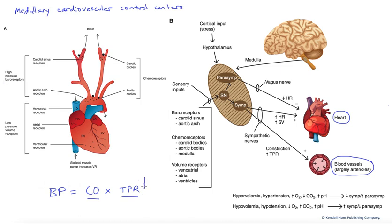That vasodilation would cause a decrease in total peripheral resistance, which would cause a decrease in blood pressure. That fall in blood pressure would potentially compromise blood flow to other essential organs and tissues. Pressure drives flow, so we want to avoid that fall in blood pressure while we're regulating blood flow to particular tissues.